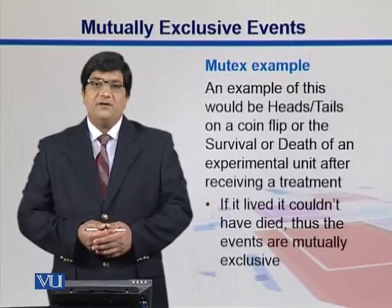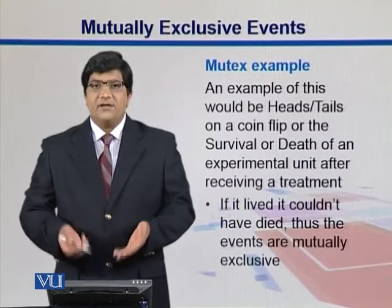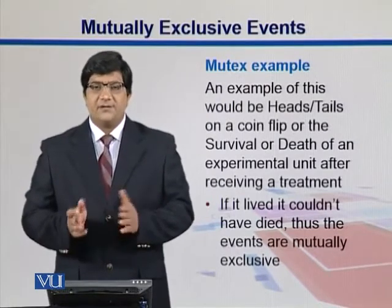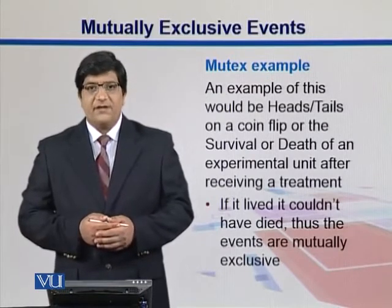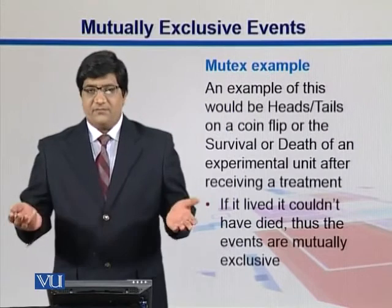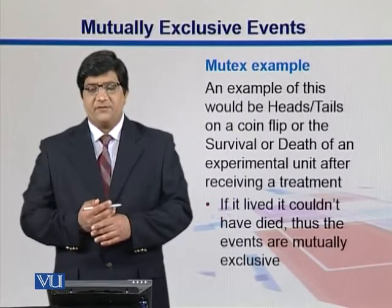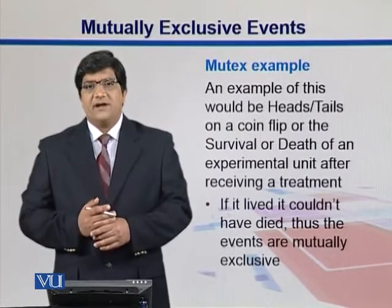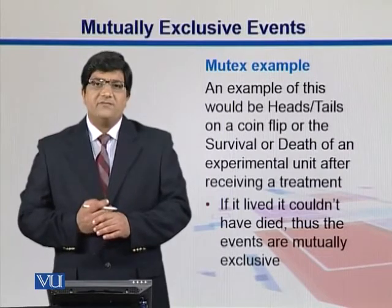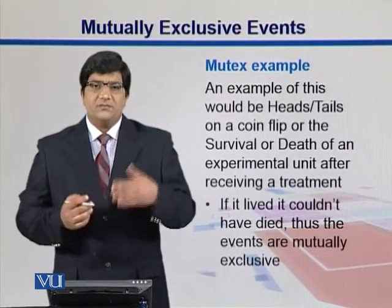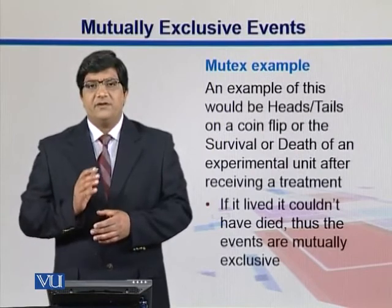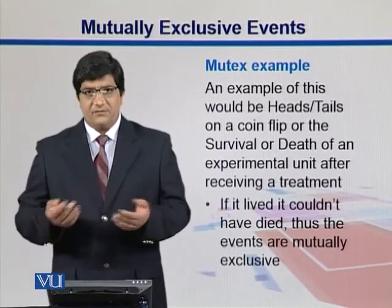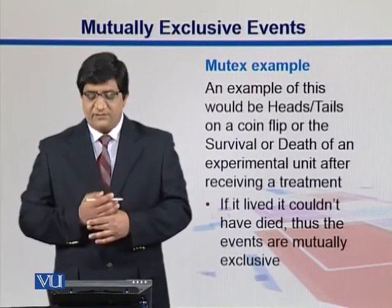An example: what is the probability of getting a head and a tail both in just one flip? Either you can get a head or you can get a tail — you cannot get both together. Similarly, survival or death of an organism is a mutually exclusive outcome. For example, if you are applying treatments on rats, whether they survive or die, we cannot have both outcomes for each individual. Death and life are mutually exclusive events.